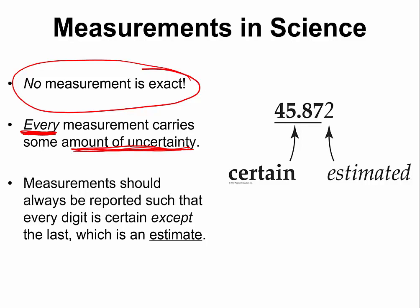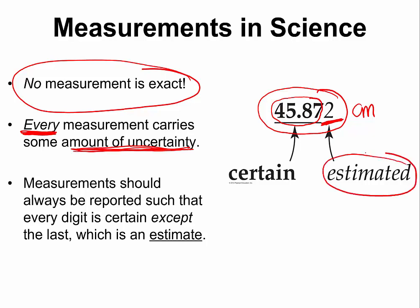Take a look at this measurement. Let us say the unit is in centimeters. All the digits in the measurement will be exact except the very last one. The last digit is always an estimate — the last digit is always a guess. Whenever we are writing a measurement, we should always report it such that every digit except the last one is exact.